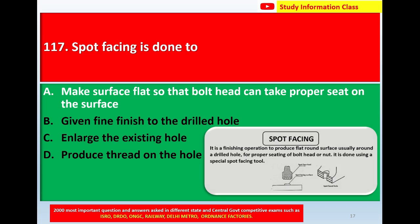Spot facing is a finishing operation to produce a flat ground surface, usually around a drilled hole, for proper seating of a bolt head or nut. It is done using a special spot-facing tool. So for question number 117, the spot facing is done to — the correct answer is Option A, make the surface flat so that the bolt head can take a proper seat on the surface.